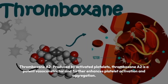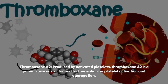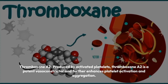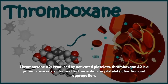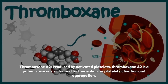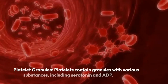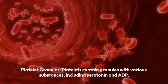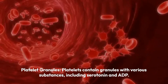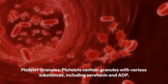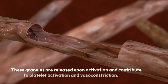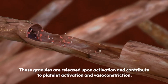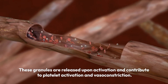Thromboxane A2, produced by activated platelets, is a potent vasoconstrictor that further enhances platelet activation and aggregation. Platelets also contain granules with various substances, including serotonin and ADP. These granules are released upon activation and contribute to platelet activation and vasoconstriction.